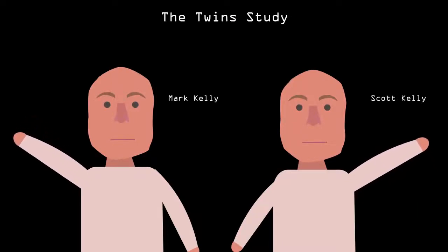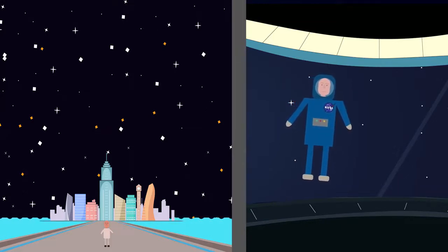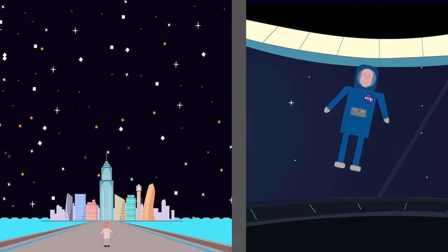Astronauts Mark and Scott Kelly were separated, one remaining on Earth while the other lived aboard the ISS for a year. Because identical twins share the same genetic makeup, the study provided a way for scientists to explore how our health is impacted by the environment around us, independent of the physical variations that naturally occur between most of us as individuals.